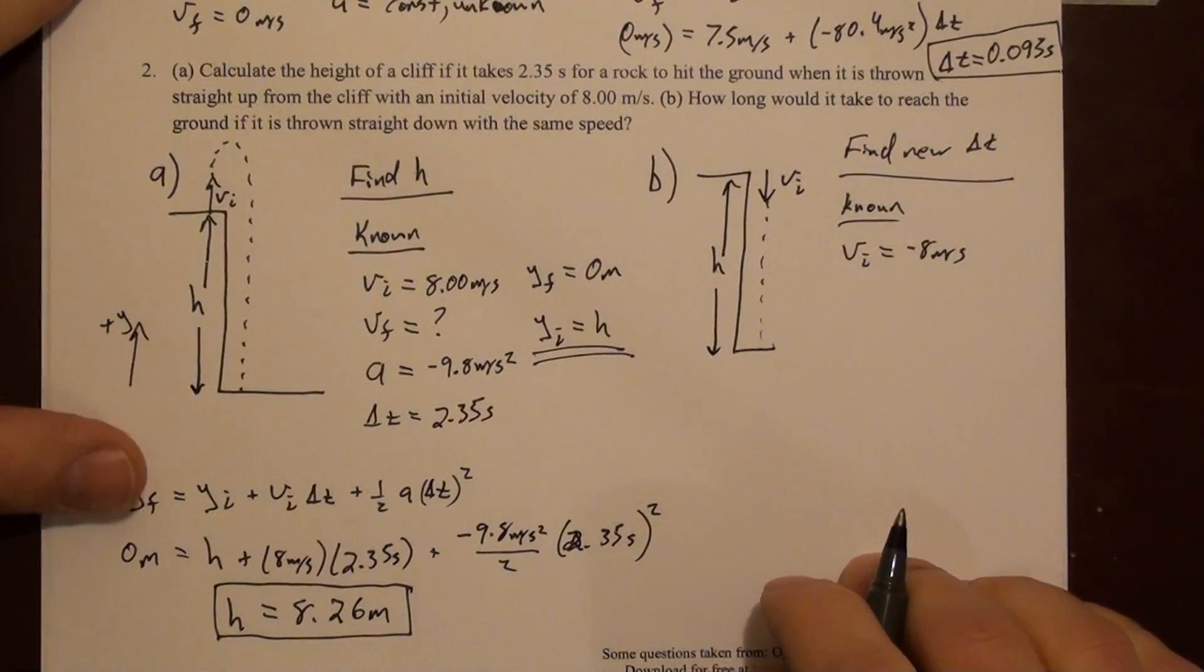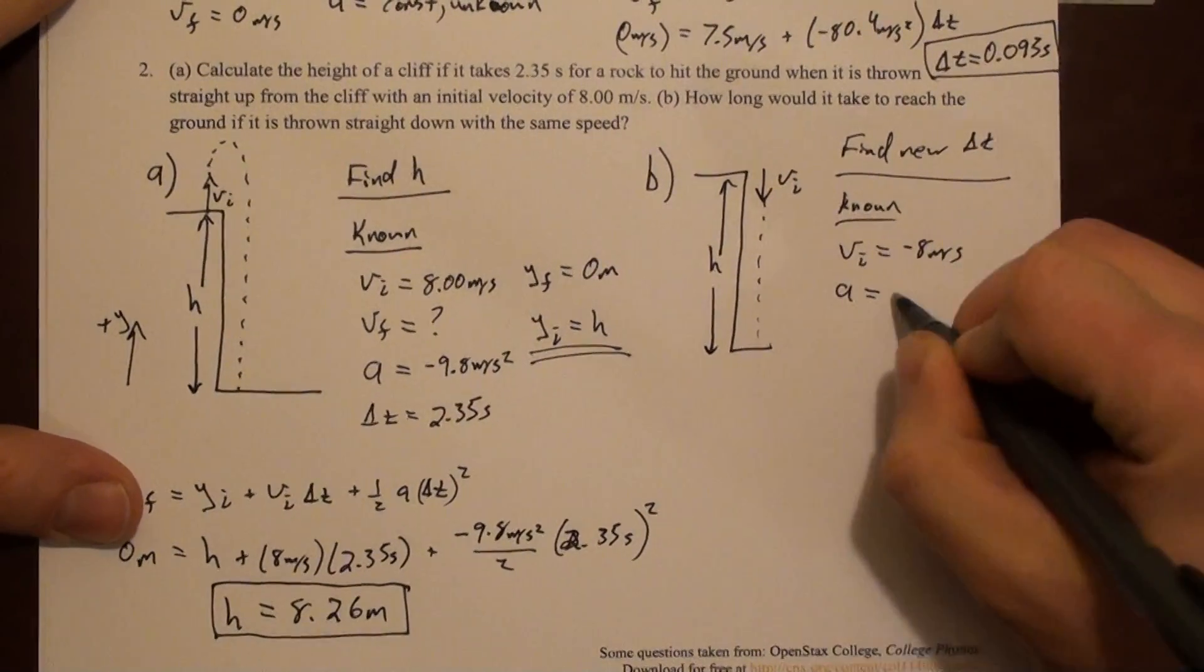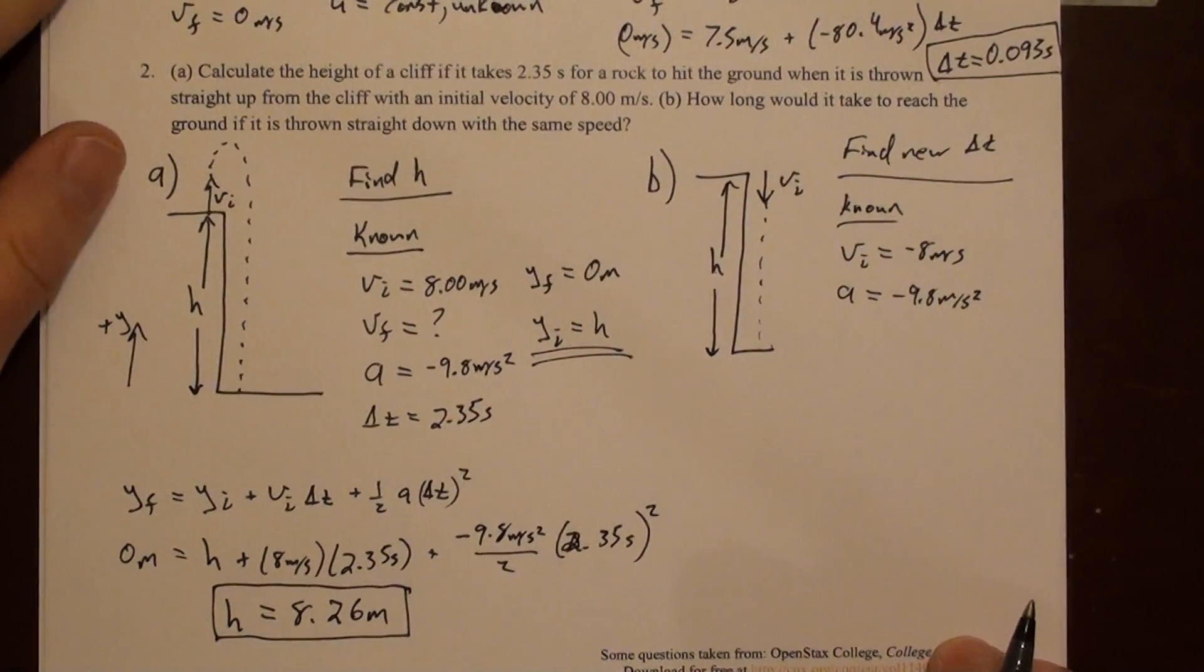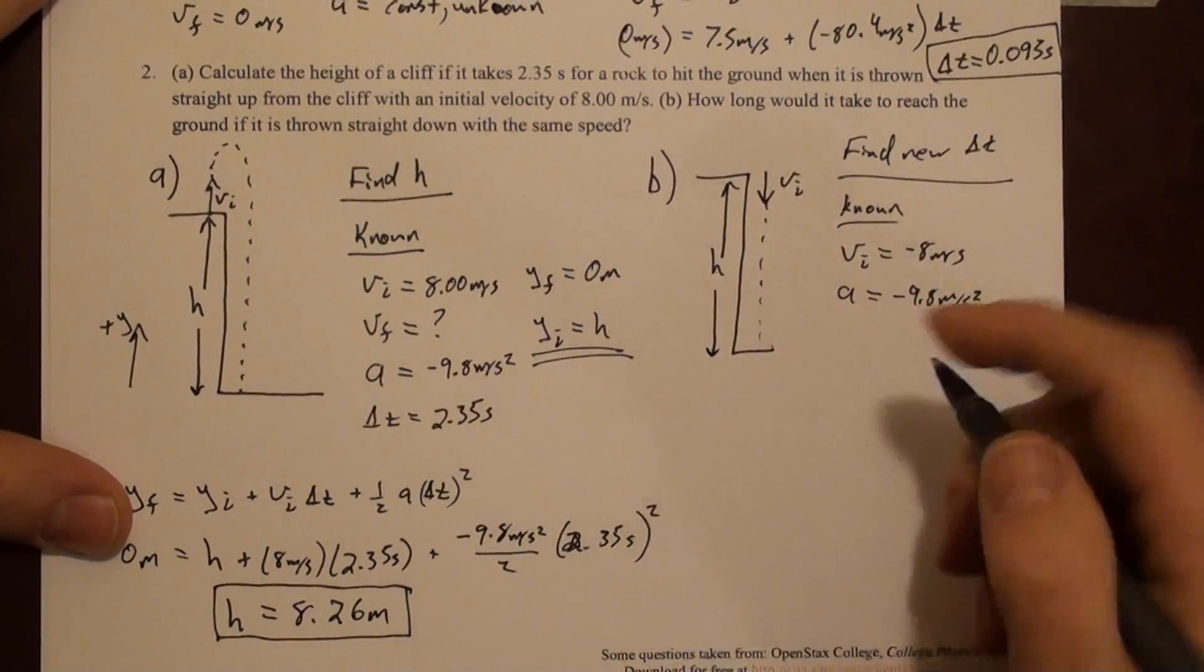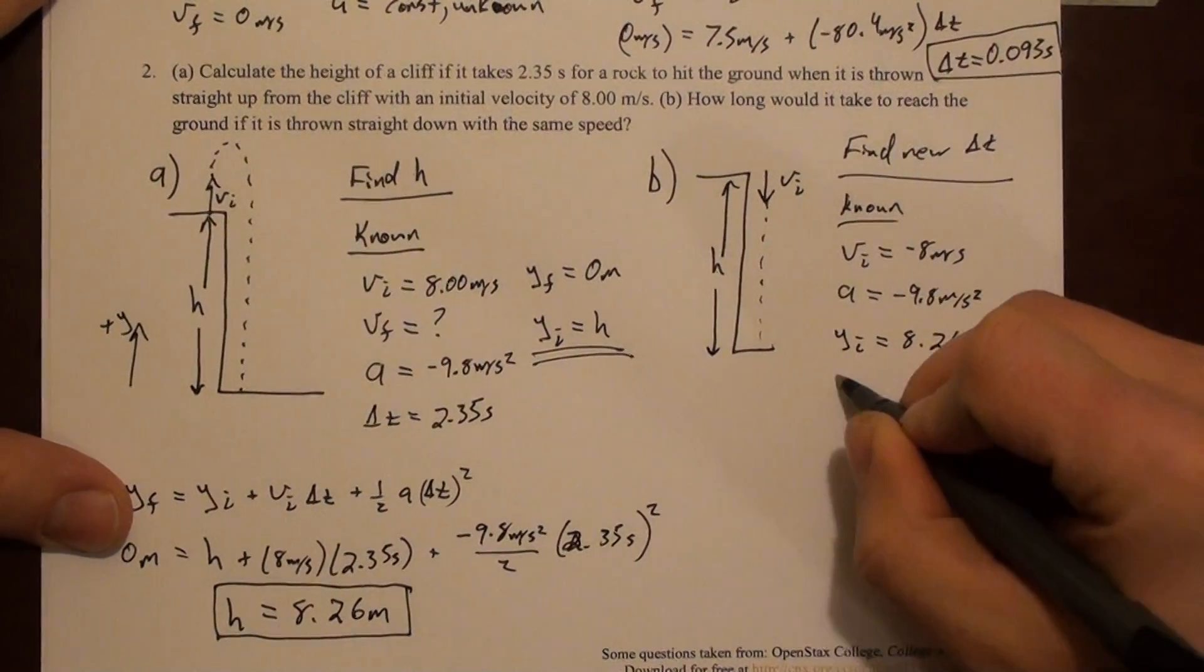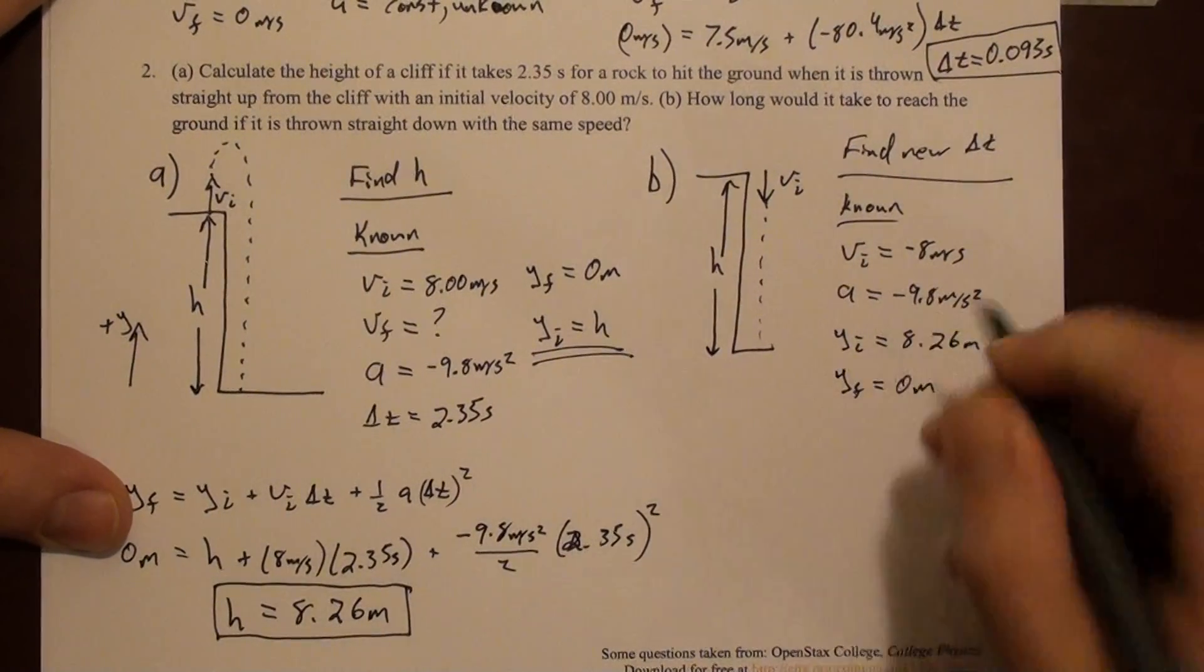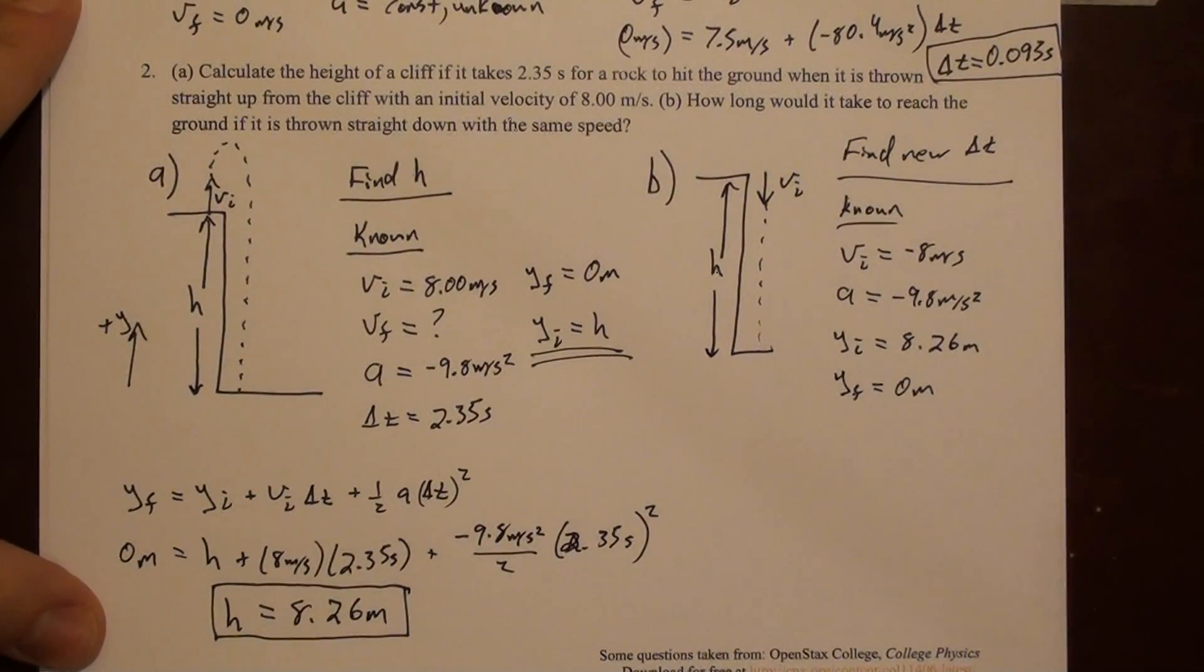So let's write down the things we know. We know v initial. It's 8 meters per second, but it's down. So it's now minus 8 meters per second. We still do not know v final, so I'm not gonna write it here. We do know acceleration. It's still 9.8 meters per second squared, and it's down as well, so it's negative. We now know the height. So y initial is this 8.26 meters, and y final is 0 meters.